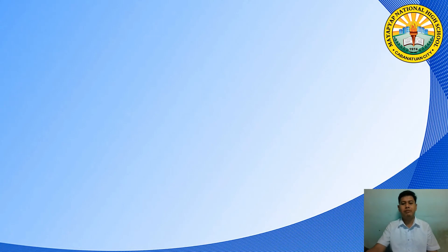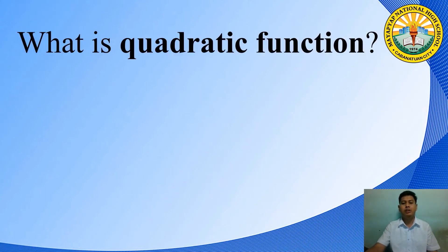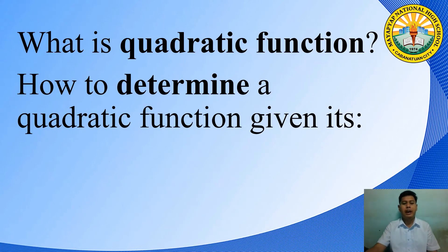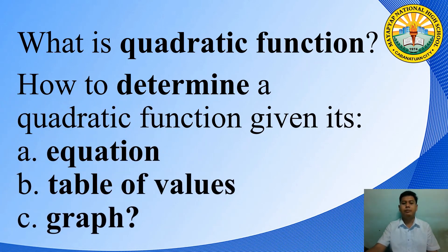Let us summarize what we have discussed today. Quadratic functions are functions described by equations of the form y equals ax squared plus bx plus c, or f of x equals ax squared plus bx plus c, where a, b, and c are real numbers and a is not equal to zero. To determine a quadratic function from its equation, write it in standard form and check if the degree is 2. For a table of values, the first differences of x coordinates must be equal and the second differences of y coordinates must also be equal. For a graph, it must resemble a U-shape, or parabola.